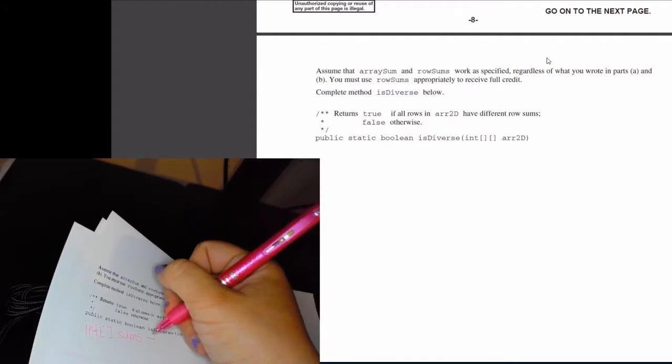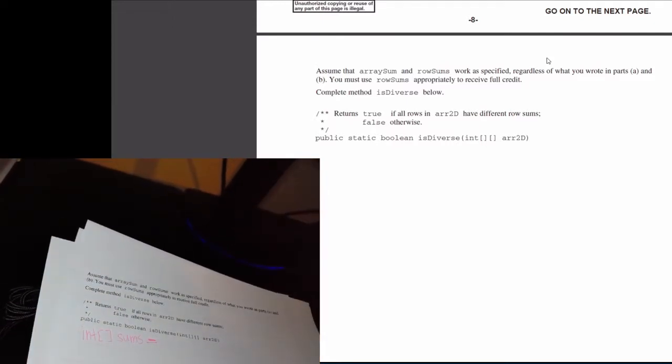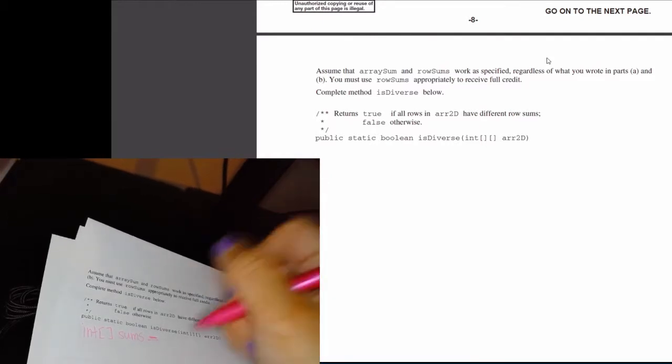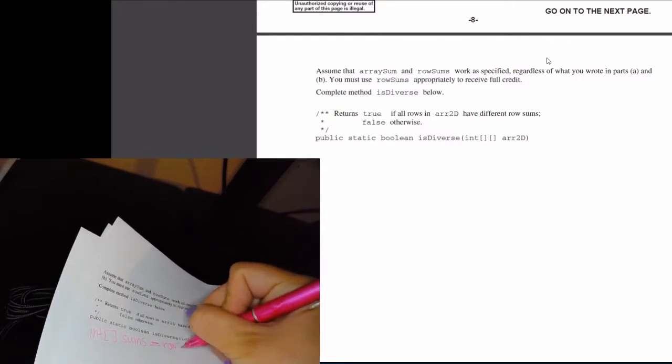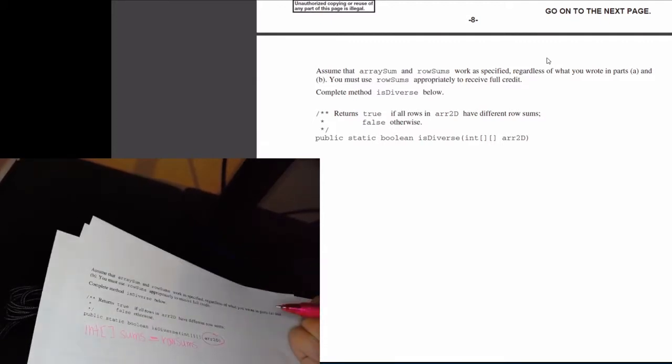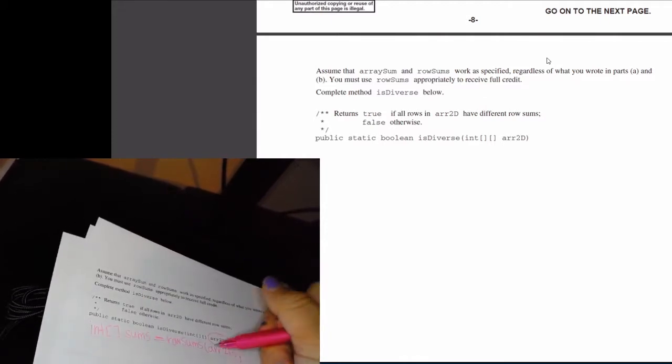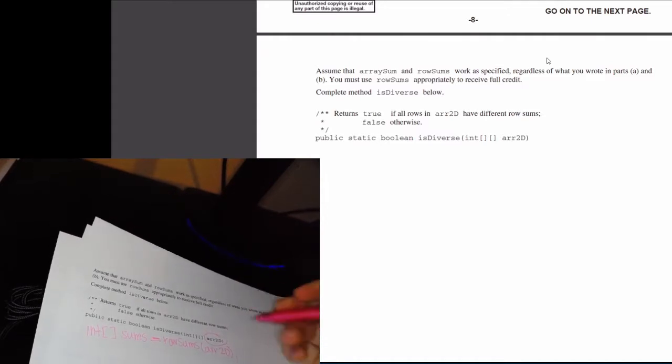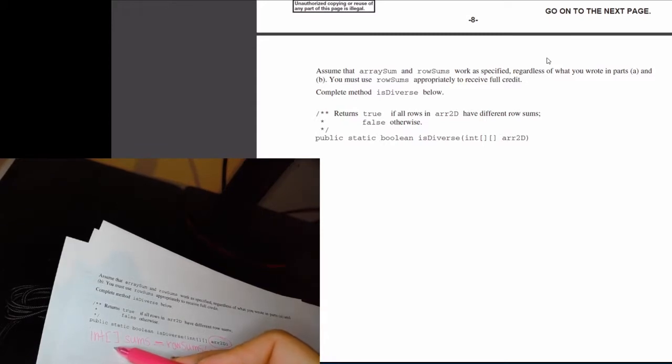I'm not going to initialize this as a default array that has default values of zeros, but I'm going to assign this a return value that is determined by a method called rowSums. And what I'm going to do is I'm actually going to feed in this argument arr2D to rowSums. So that's going to store that to that 1D int array.